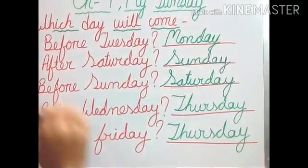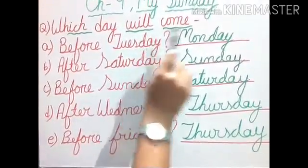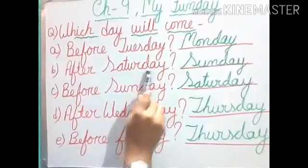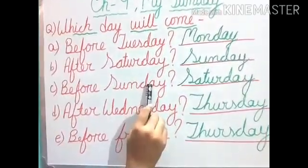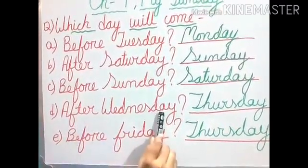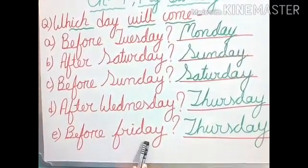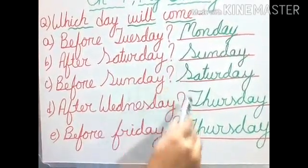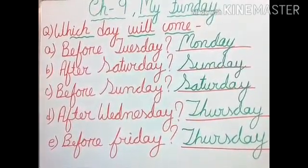So let us review again from A. Which day will come before Tuesday? That is Monday. Which day will come after Saturday? Sunday. Number C: which day will come before Sunday? Saturday. Number D: which day will come after Wednesday? Thursday. Number E: which day will come before Friday? It is again Thursday. So you will copy all the explanation in your maths copy and try to do the answers by yourself.